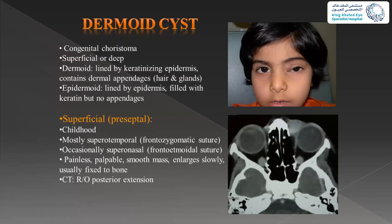The first example is a congenital one: dermoid cysts, which are usually congenital choristomas. They could be superficial or deep. The way we differentiate between dermoid and epidermoid is only histopathologically — clinically they look the same. Histopathologically, the difference is the presence of dermal appendages such as skin glands, sweat glands, or sometimes teeth. The epidermoid is usually just filled with keratin with no skin appendages.